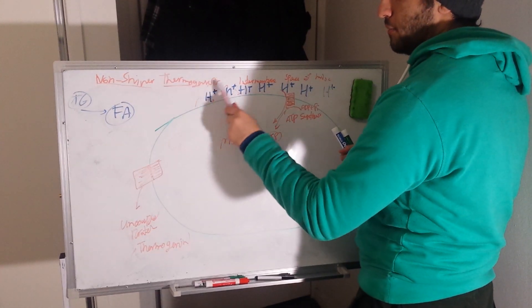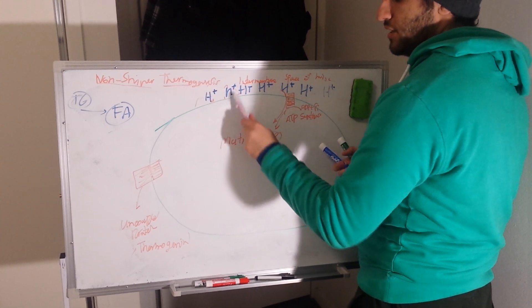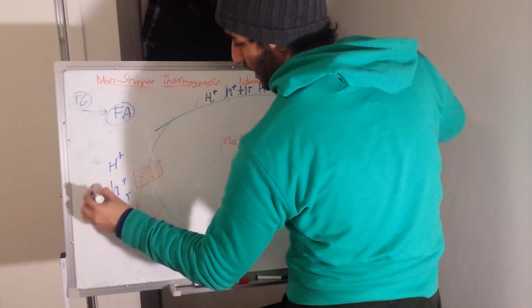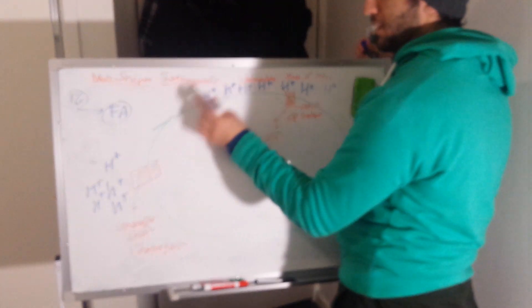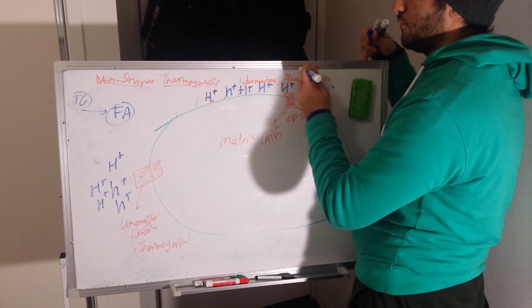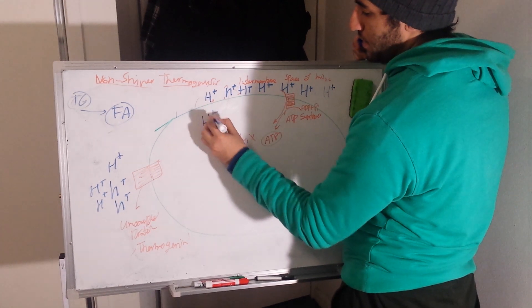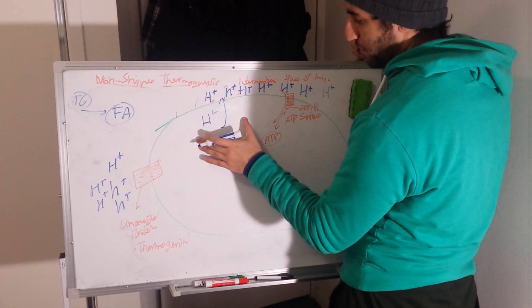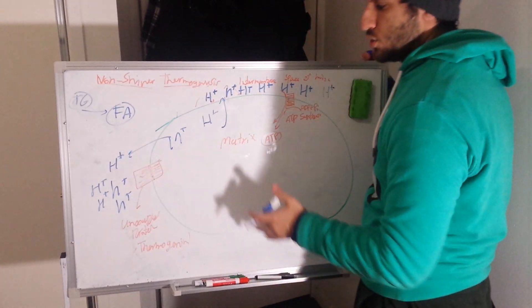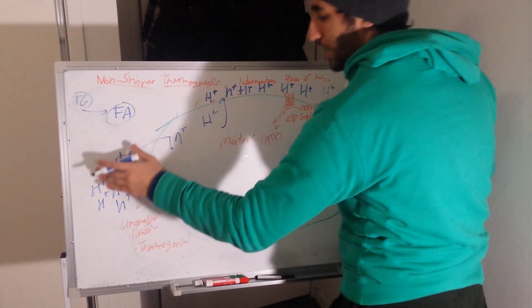This is uncoupled protein. What it does is that it uses the hydrogen ion gradient inside the matrix. Because again, we are having the electrons flowing from complexes one, two, three, and four, and hence as a result of flowing, we have hydrogen ions pumping from the matrix to the intermembrane space. Similar case here, it is being done. We are having hydrogen ions from inside going outside.